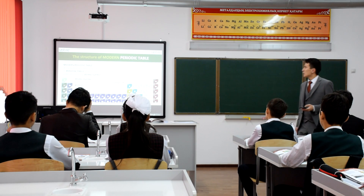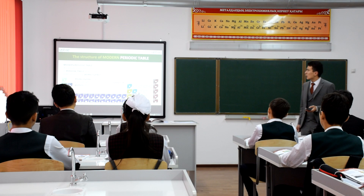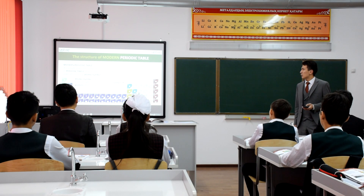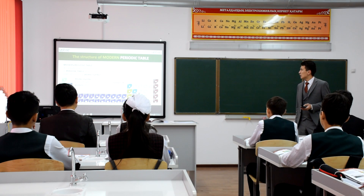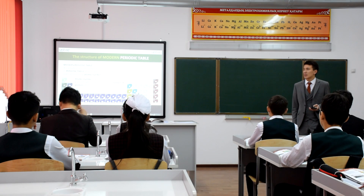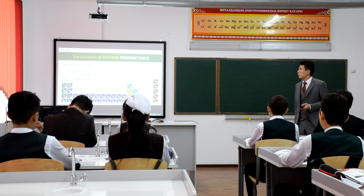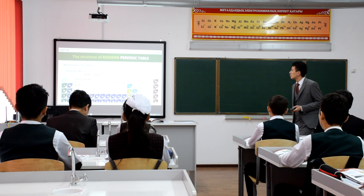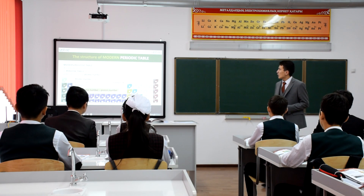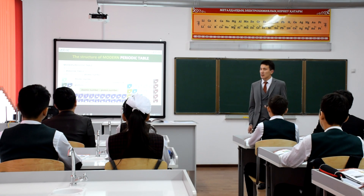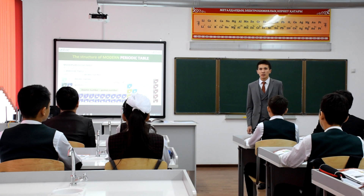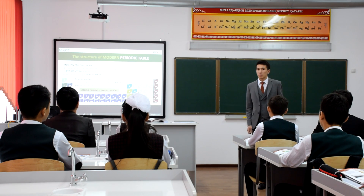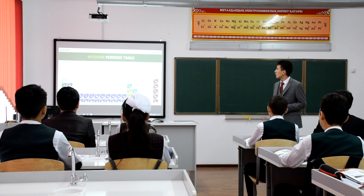Atomic number. Atomic number is the order number of elements, which is indicated by the number of protons. Atomic number is equal to proton number.